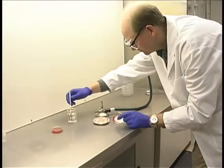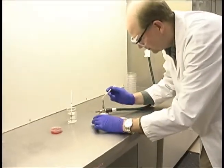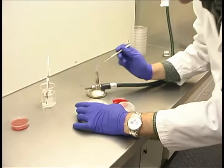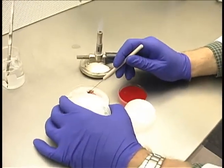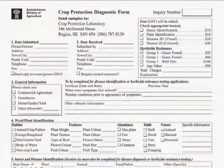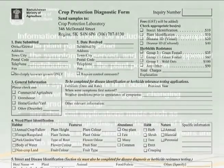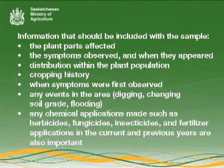Viruses are the exception. The Crop Protection Laboratory does not test for viruses on site, but we can send this work to other labs if necessary. The most important step is to include a submission form or a piece of paper with all your contact information, mailing address, phone number and fax or email address. Then include the information requested earlier in this video. You can never include too much information.